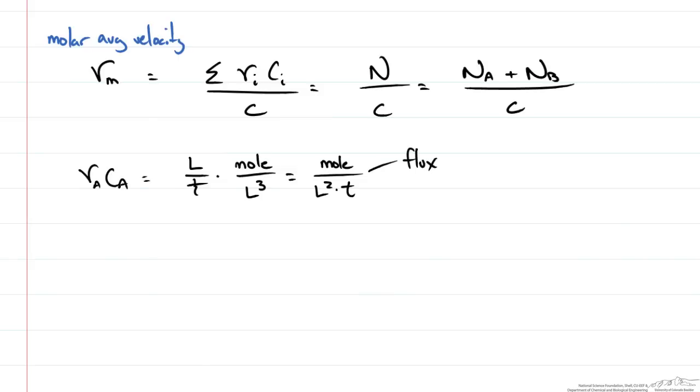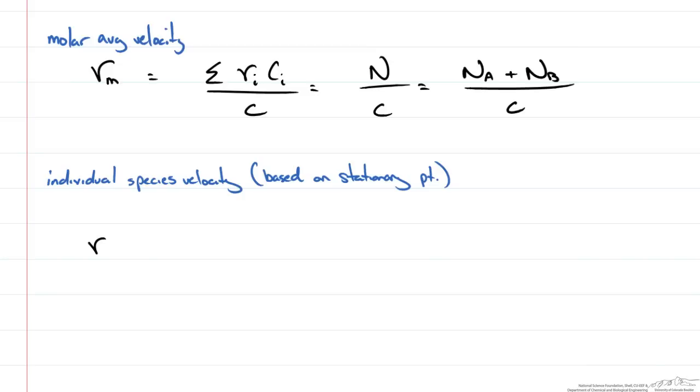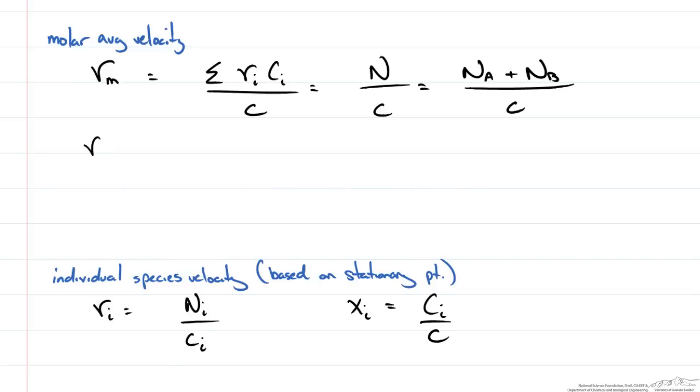Similarly, if we look at an individual species velocity with respect to a stationary coordinate, we are going to write this VI. We could say that it is the flux of I over the concentration of I. We also know that the mole fraction, XI, is equal to the concentration of I over the total concentration. This means we could expand our molar average velocity of our mixture as such, where we have the velocity of A times the concentration of A plus the velocity of B times the concentration of B all over the total concentration. This, based on this relationship, is going to give us XA, the mole fraction of A times the velocity of A plus the mole fraction of B times the velocity of B.